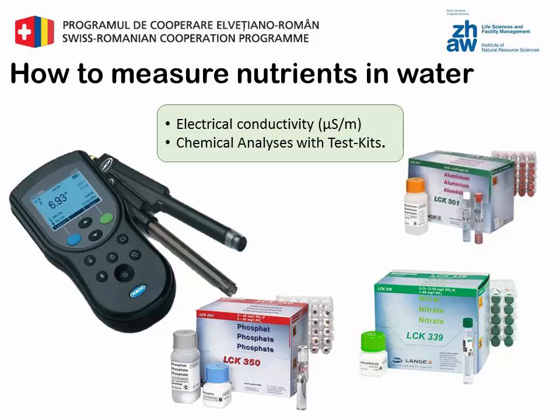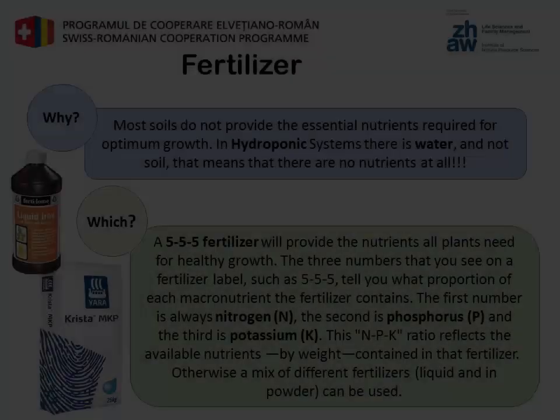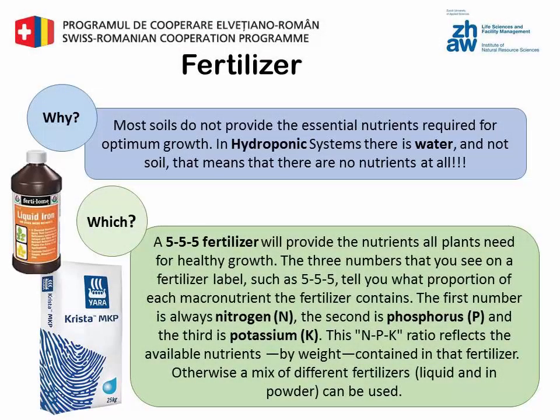To determine the precise amount of a specific element present in solution, chemical kits can be used. Aquarium supply stores also have simple analysis kits that can be used by a backyard aquaponic grower. Because hydroponic systems use water instead of soil, it is necessary to add nutrients required by plants to the solution. This is done by adding fertilizers.